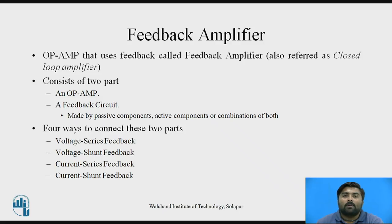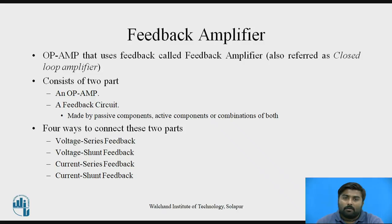Now let's see what is meant by a feedback amplifier. The op-amp that uses feedback is called a feedback amplifier. It forms a loop, so it is called a closed-loop amplifier. It has two parts: first is the op-amp, and the second one is the feedback circuit. The feedback circuit is composed of passive components, active components, or a combination of both. Passive components are resistors, capacitors, and inductors, while active components are transistors and diodes. By using this feedback, there are four configurations: voltage series feedback amplifier, voltage shunt feedback amplifier, current series feedback amplifier, and current shunt feedback amplifier.